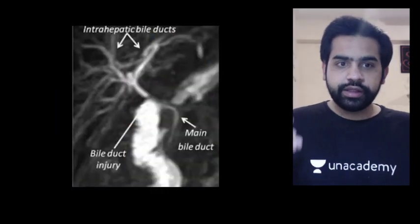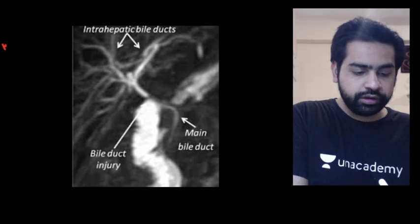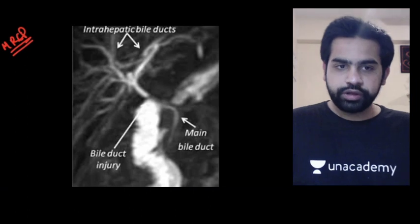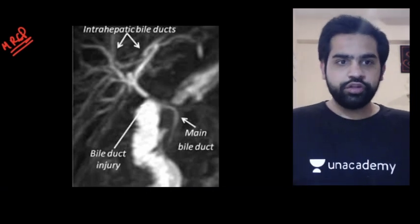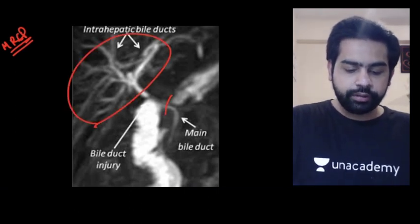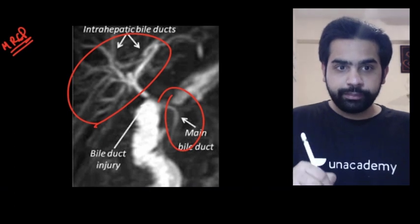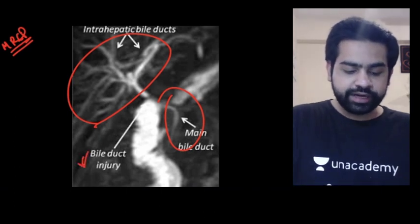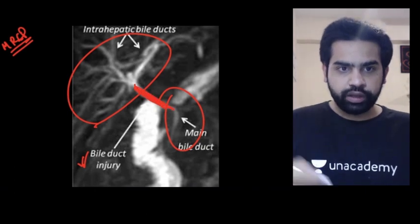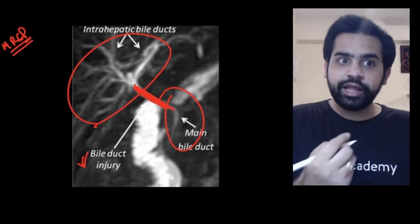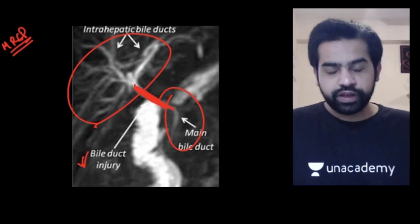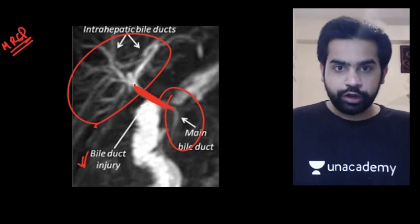MRCP is a diagnostic procedure — a specialized MRI that helps clearly visualize the intra-biliary radicles and bile duct. The image shown here is of a bile duct injury: the common bile duct has a rent and bile is leaking out, which is very well picked up by the MRCP. The investigation of choice for CBD injury is MRCP.